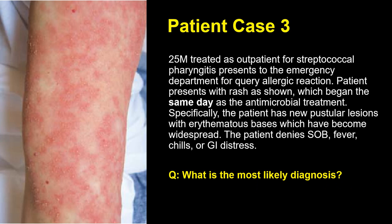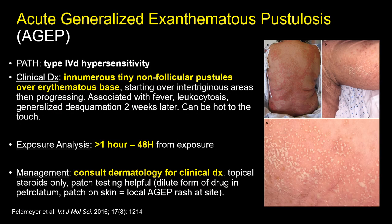Case 3: A 25-year-old male treated as an outpatient for strep throat presents to the emergency department after developing a rash the same day as starting the antibiotics. The rash is described as a cosmetic, generalized, erythematous maculopustular rash involving innumerable pustular lesions with an erythematous base. The patient denies systemic features of illness. This syndrome is known as AGEP — acute generalized exanthematous pustulosis — a type IV hypersensitivity that tends to have a very short latency, typically occurring in the first 48 hours after exposure, often the same day. The key to diagnosis is recognizing the pustular component within numerous small pustules on an erythematous base.